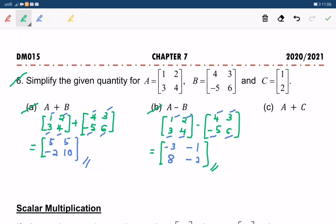And C: A plus C. So, A is 1, 2, 3, 4 plus matrix C, which is 1, 2.